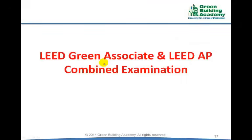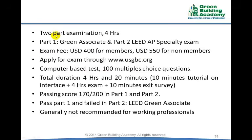There is an option to take the LEED Green Associate and LEED AP examinations together. The examination is conducted in two parts over 4 hours. Part 1 is the LEED Green Associate examination and Part 2 is the LEED AP Specialty examination. The examination fee is $400 for members and $550 for non-members. Each part has 100 multiple choice and multiple response questions. The total duration is 4 hours and 20 minutes. The passing score is 170 out of 200 for both parts. If you pass Part 1 and fail Part 2, you can still be a LEED Green Associate. We generally do not recommend the combined examination for working professionals.